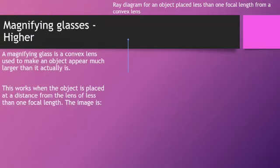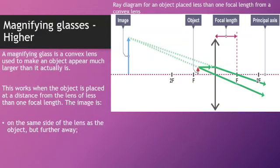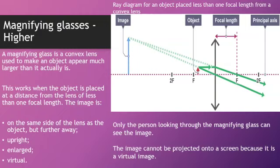Magnifying glasses. A magnifying glass is a convex lens used to make an object appear much larger than it actually is. This works when the object is placed at a distance from the lens of less than one focal length. The image is on the same side of the lens as the object but further away. Upright, enlarged, virtual. Only the person looking through the magnifying glass can see the image. The image cannot be projected onto a screen because it is a virtual image.